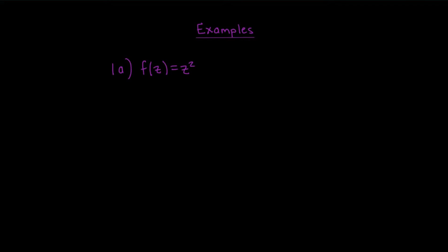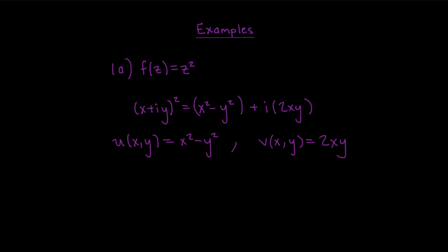For the first example, consider the function f that takes a complex number z and squares it. If we take z = x + iy and then square it, what you get is x² − y² + i·2xy. In other words, the real and imaginary parts of f are given by u(x, y) = x² − y² and v(x, y) = 2xy.